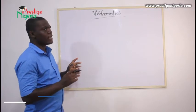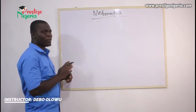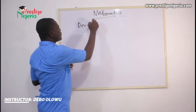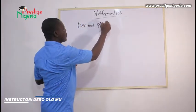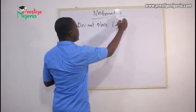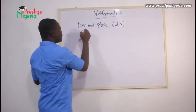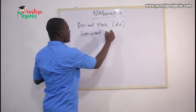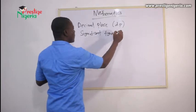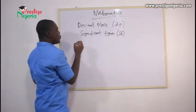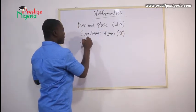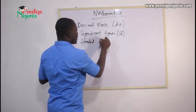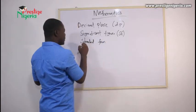I will start by drawing attention to something you are familiar with. We have what is called decimal place, significant figures, standard form, and approximation.